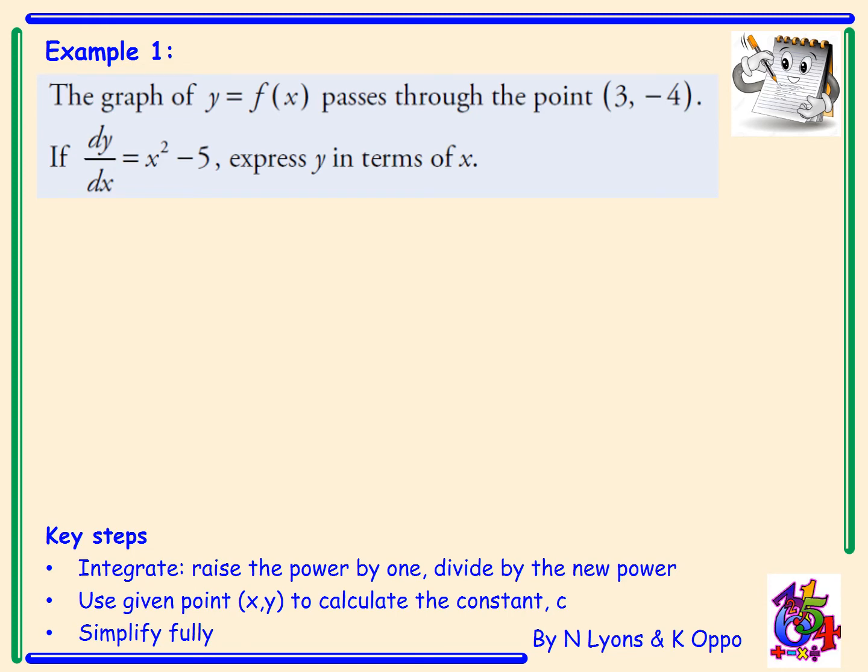The key steps are integrate, raise the power by 1, divide by the new power, and use the given point (x,y) to calculate the constant c. That's the extra information I was talking about. Then we simplify fully at the end.